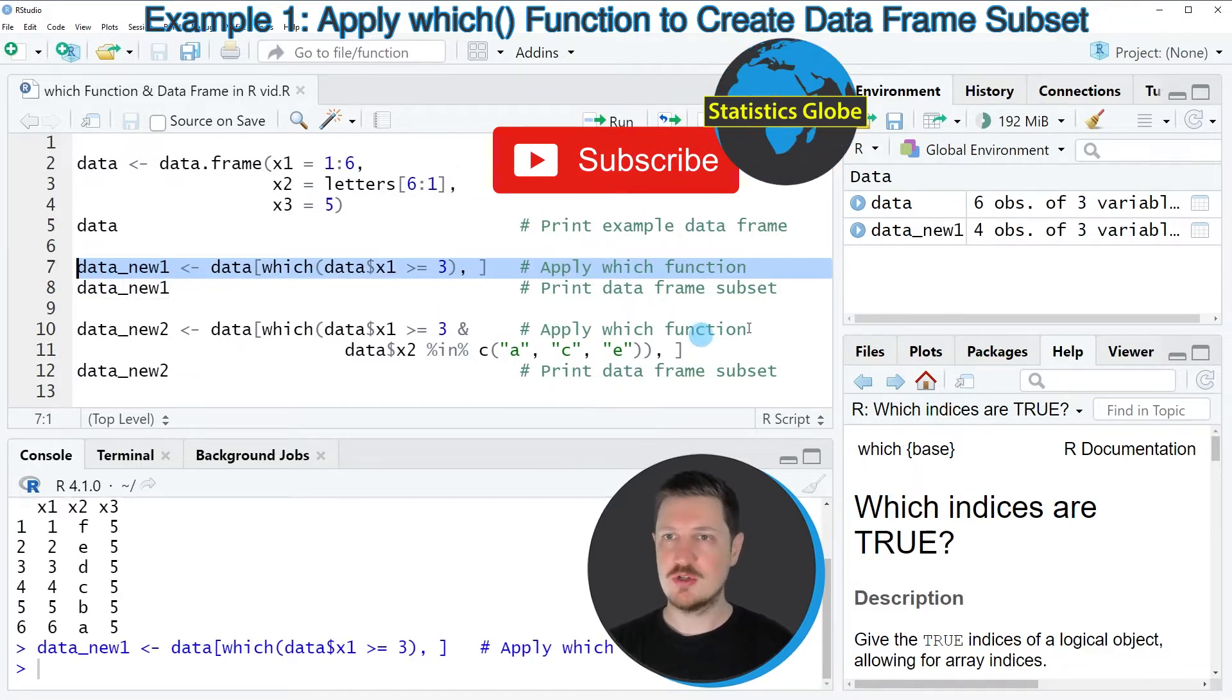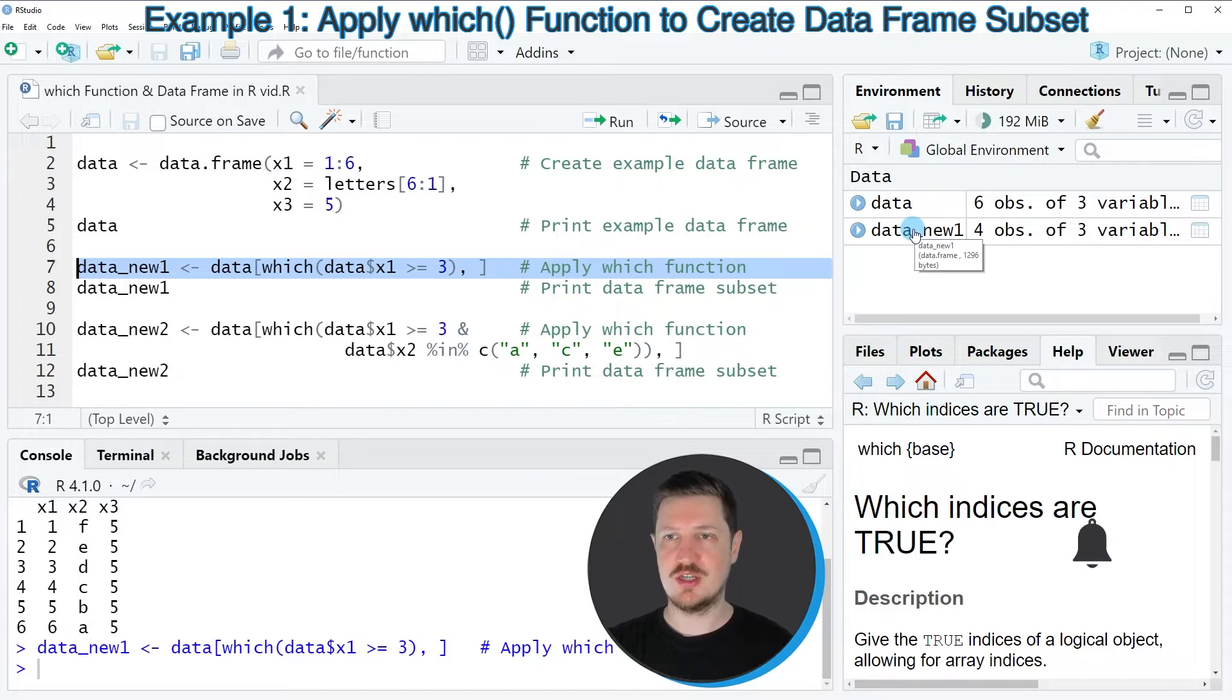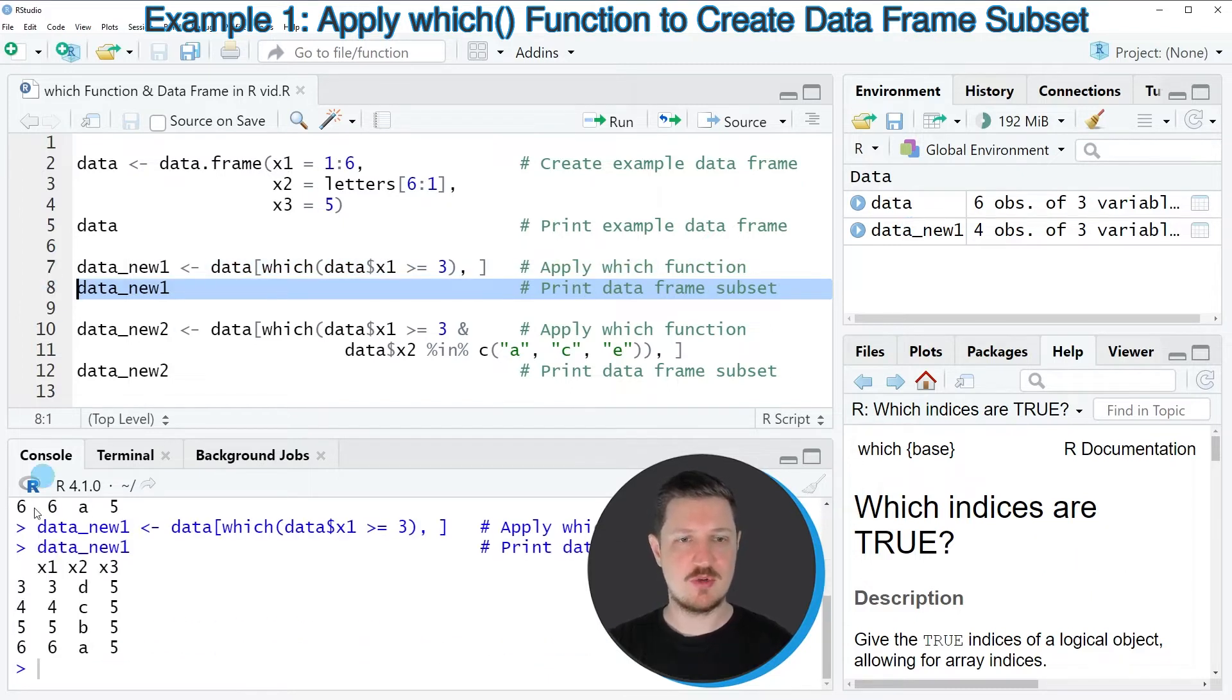So after running line seven of the code, a new data frame object called data_new1 is appearing at the top right. And if we print this data frame to the bottom in the RStudio console, you can see that we have removed all those rows from our input data frame where the column x1 was containing values smaller than three. So in this case we have created a subset containing only four of the original six rows.